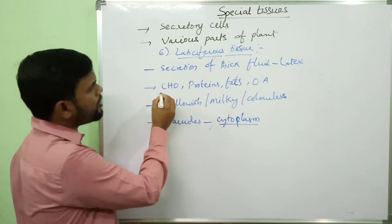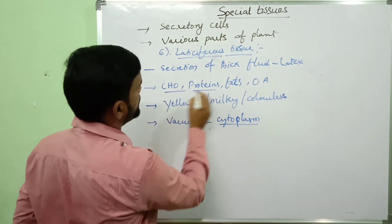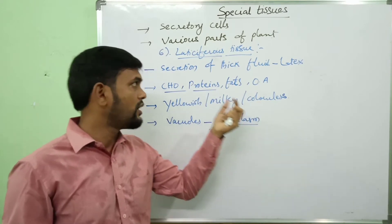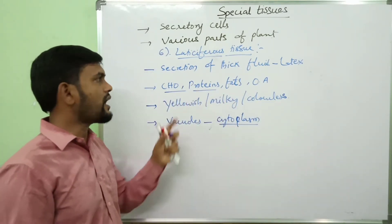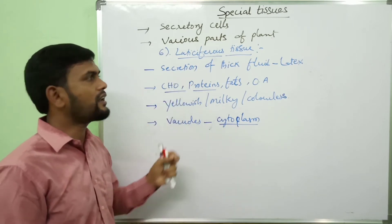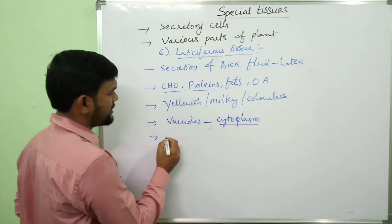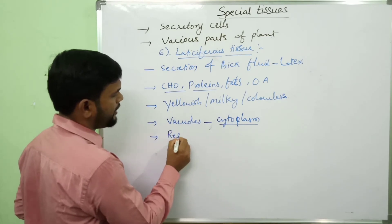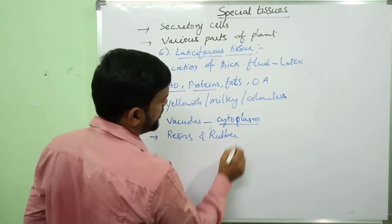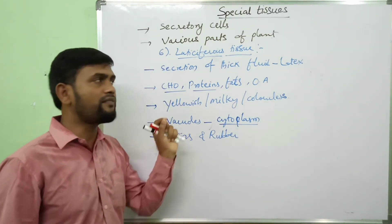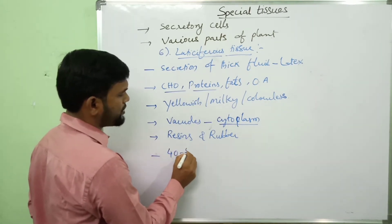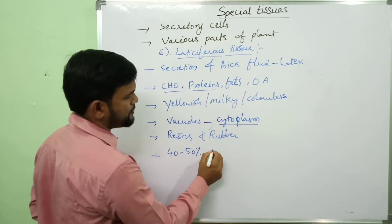Among all components — carbohydrates, proteins, fats, organic acids, and enzymes — resins and rubber are the chief components of latex. They are the main components. Nearly 40 to 50% of rubber is present in Hevea brasiliensis.